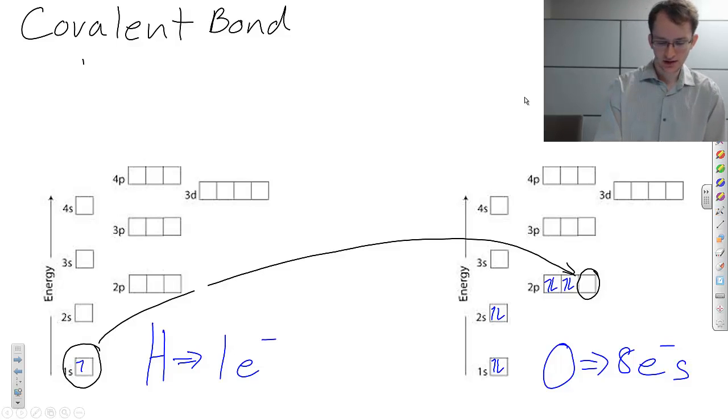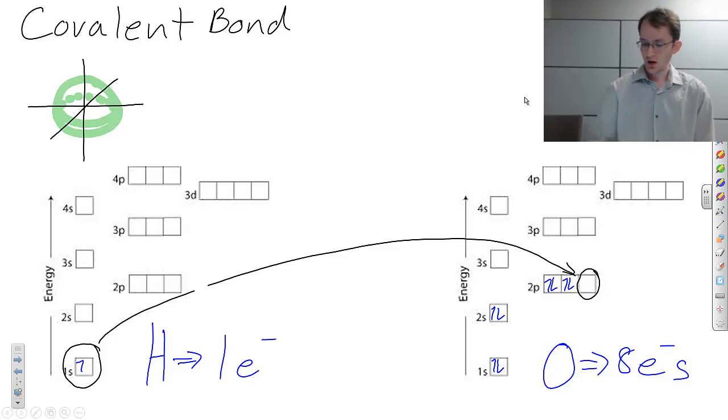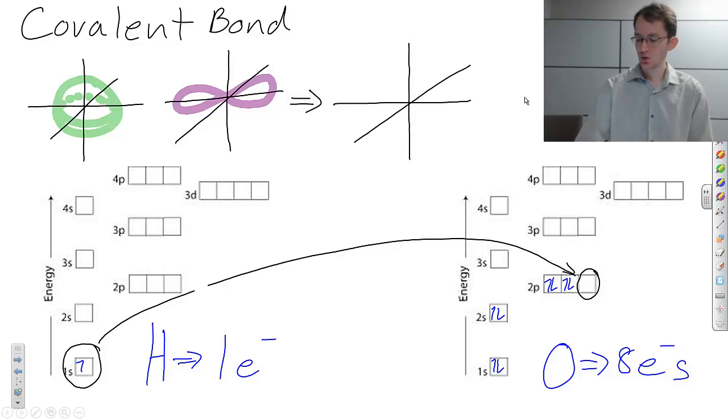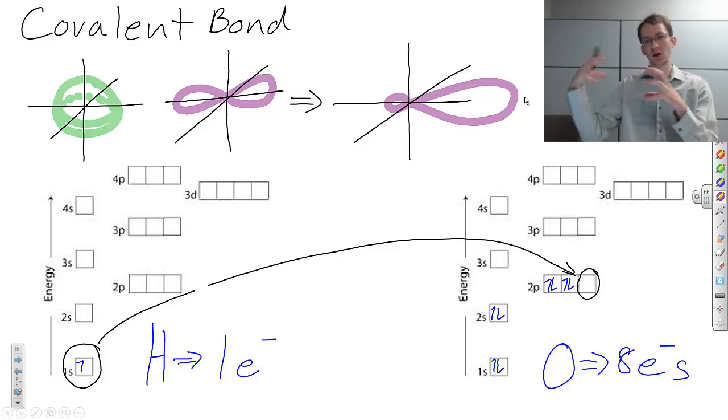We know that the s subshell, if we were to draw it, is spherical in nature, kind of like this. We also know that a p subshell, and I'm only going to draw one p subshell because the other two are filled, the p subshell is something like this, kind of a figure eight. What happens is, this is one way that shells can kind of deform, is you get something called SP hybridization. This s shell and this p shell kind of combine in a unique way, and you'll get kind of a new shape of p shell that is kind of like this, where one side, one lobe is larger than the other.